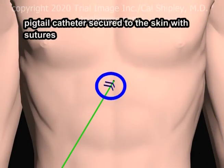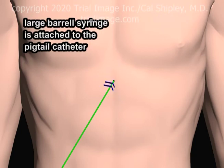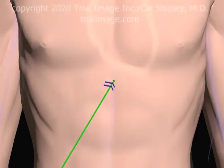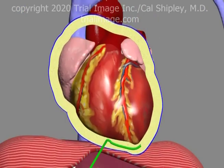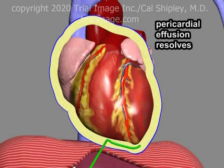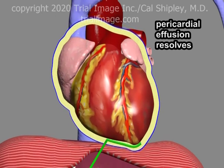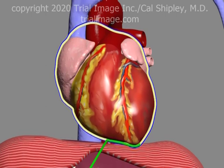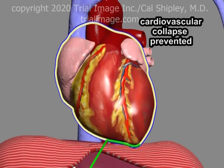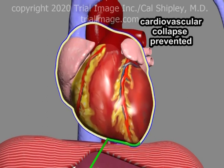The pigtail catheter is anchored to the external chest wall with sutures. Typically, a large barrel syringe is then attached to the pigtail catheter and the syringe used to actively remove pericardial effusion fluid until signs and symptoms of cardiopulmonary compromise have been relieved. The pericardial effusion is resolved, and cardiovascular collapse from acute cardiac tamponade is prevented.